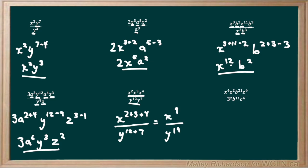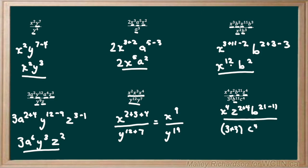For our last example we have x to the power of 4 times z to the power of 2 times b to the power of 21 times z to the power of 4, all over 3 to the power of 2 times b to the power of 11 times c to the 4. Grouping like terms: the two z's share a base, and the two b's share a base. For z it's multiplication so we add: 2 plus 4 equals 6. For b it's division so we subtract: 21 minus 11 equals 10. And 3 to the power of 2 is 9. Our final answer is x to the power of 4 times z to the power of 6 times b to the power of 10, all over 9 times c to the power of 4.